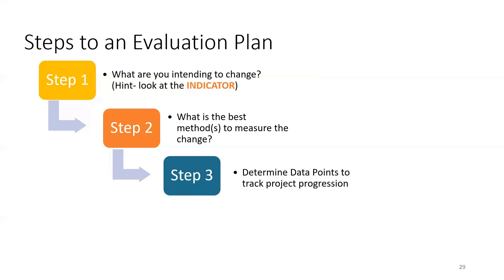Step three: evaluation involves tracking the same data points at different points in time. ANA asks that you track the progress of your project in yearly increments — year one, year two, year three, and the end of the project. There is an additional point, which is three years past the project end, but there will be more on this on the next slide.